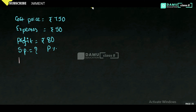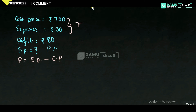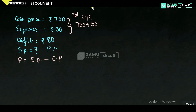Profit is equal to selling price minus cost price. If selling price is more than cost price, then only we will get profit. The cost price is 750 and expenses is 50 rupees, so we need to add them. Total cost price will be 750 plus 50, so total cost price equals 800 rupees.